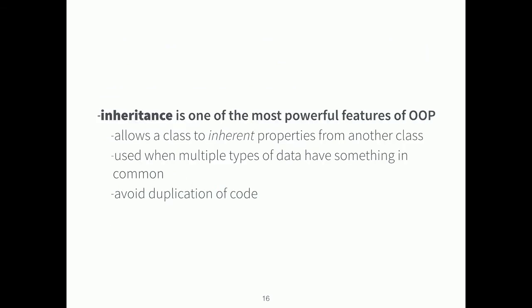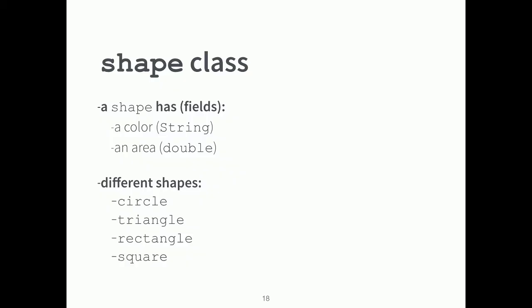Inheritance is one of the most powerful things about object-oriented programming. It allows a class to inherit properties from another class. It's used when multiple types of data have something in common, and it lets us avoid duplication of code — which is great for debugging, as well as for extending the functionality of your code. Let's say I have a class called a Shape. A shape has fields: color, defined as a String, and area, defined as a double. More specific shapes include circles, triangles, rectangles, and squares.